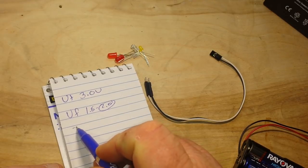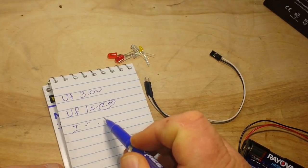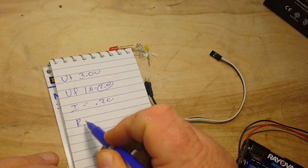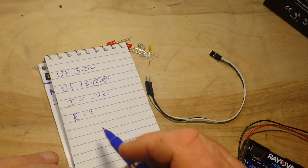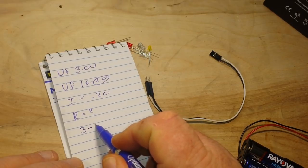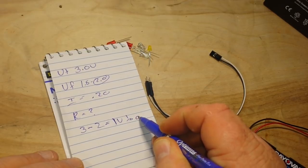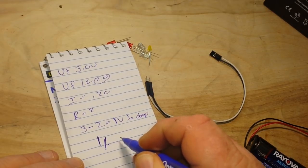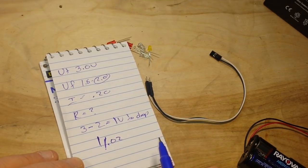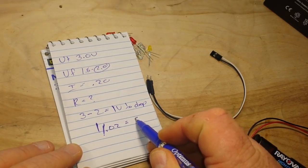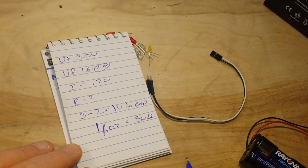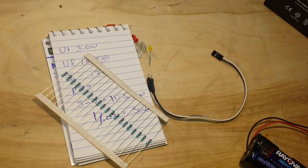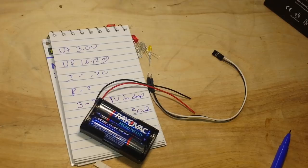So we want our current to be about 20 milliamps. And now we have all the information we need except what size resistor we need. So 3 volts minus 2 volts equals 1 volt to drop. And so if we take 1 volt and we divide that by 0.02 or 20 milliamps, now we get 50 ohms. Closest resistor to 50 ohms is 47 ohms. So now we've got all the information we need and all the parts we need. Let's get to constructing.